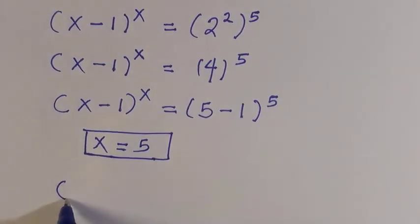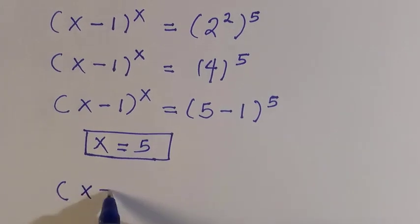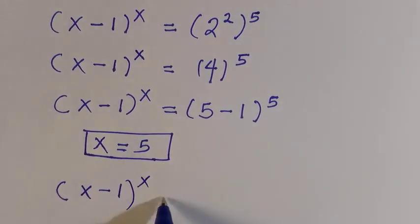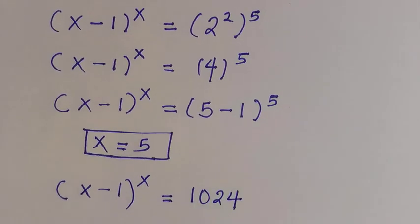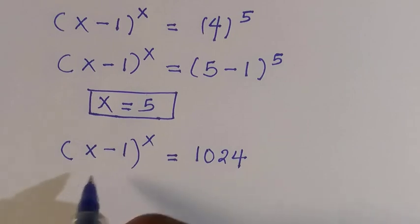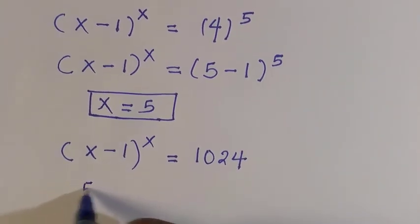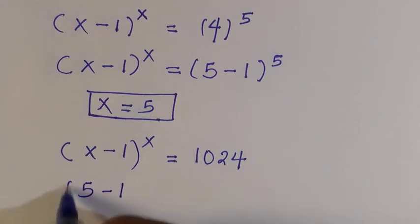So to verify, we have (x-1)^x = 1024, and by putting in the value of x, we have this as (5-1) raised to power of 5.